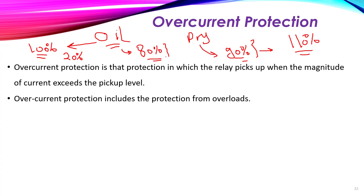If I want to protect my transformers against overloading, when the loading exceeds 80 percent or when the current exceeds a certain value, the relay will operate to trip the circuit. In real life, for electrical motors such as induction motors, overloading means exceeding rated load up to about 110 percent, at which point the relay operates to cut the circuit.